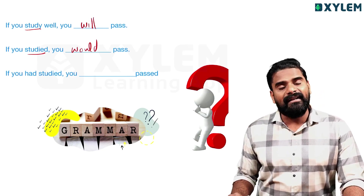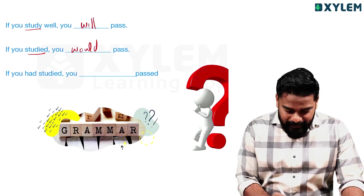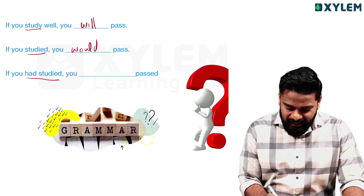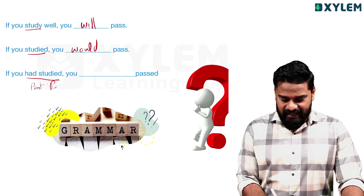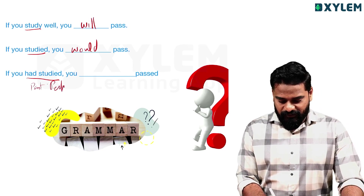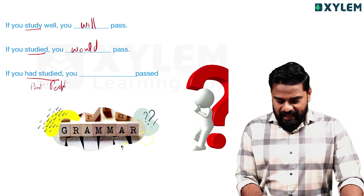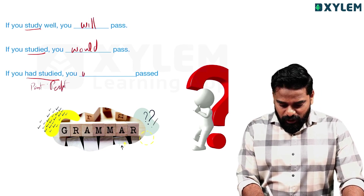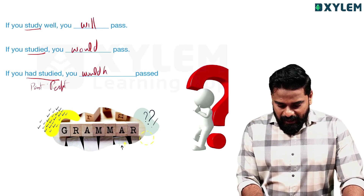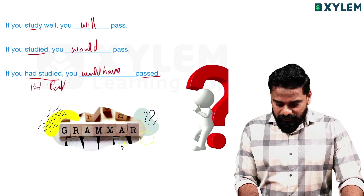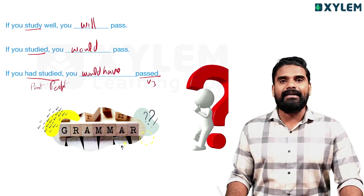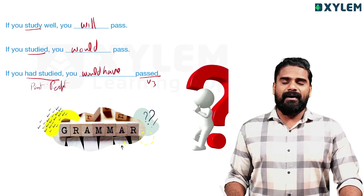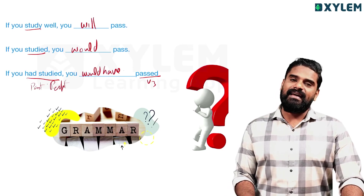For example, third condition: 'If you had studied...' — past perfect in the if clause. The main clause uses would have plus V3: 'I would have given you sweets.' That's the answer.